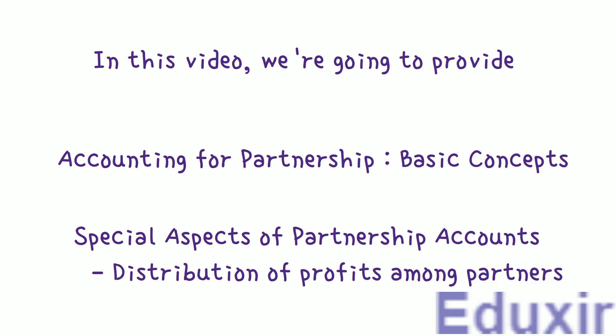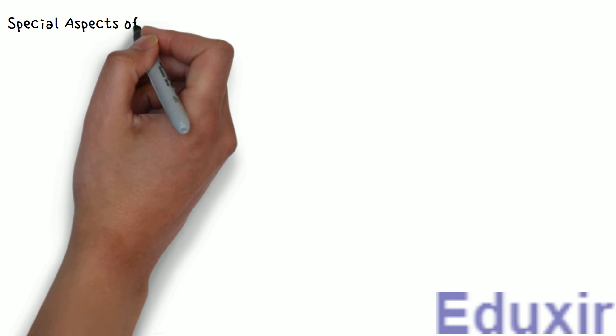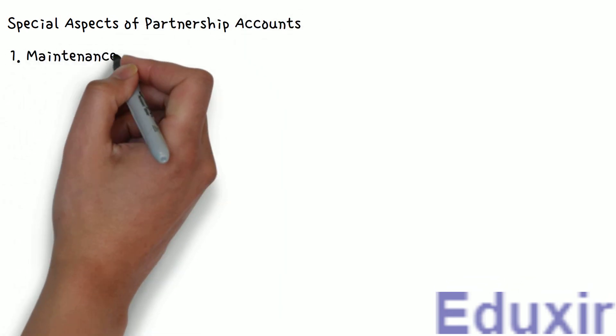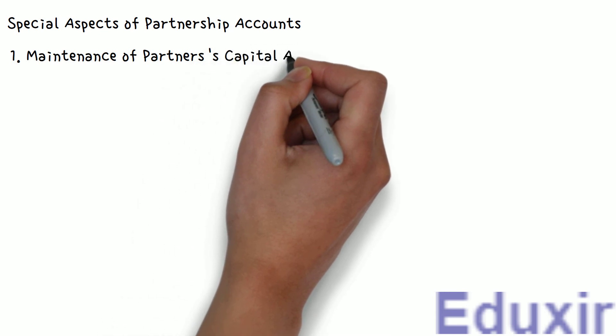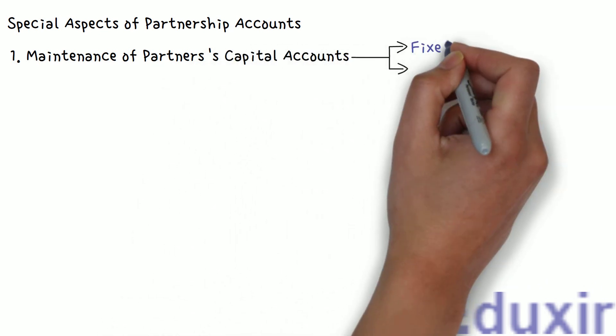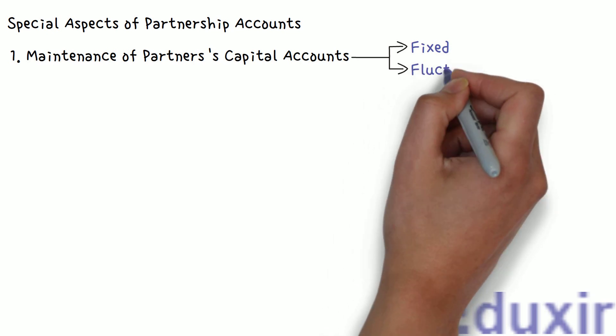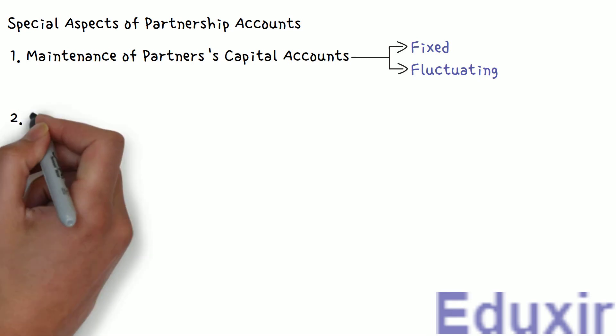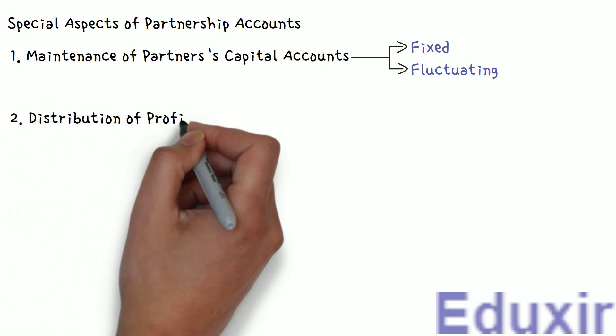In the previous video, we discussed the first special aspect of partnership accounts, namely the maintenance of partners' capital accounts. We learned about the two methods — the fixed and fluctuating capital methods. In this video, we are going to learn about the second special aspect: the distribution of profits among the partners.